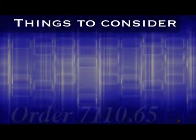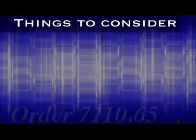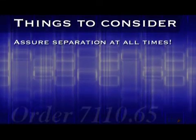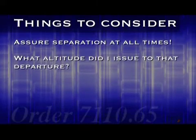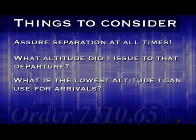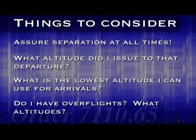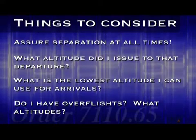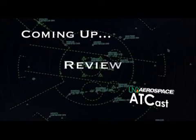These are just a few examples you might encounter. Whatever the situation, exercise good judgment and assure separation at all times. The key is to think ahead. What altitude did I just issue to that departure, and consequently, what is the lowest altitude I can use for arrivals? Do I have any overflights and what altitudes are they at? How will that affect the altitudes I can use for other traffic? Up next, we'll review the key concepts from this episode.